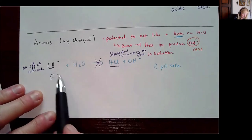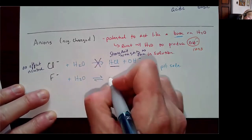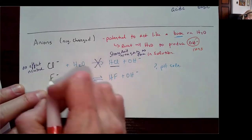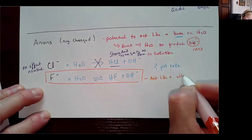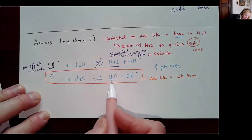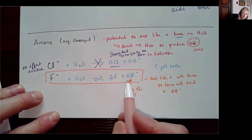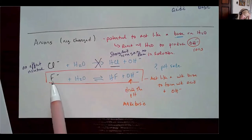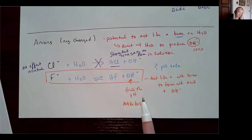Fluoride ion, however, is the anion of a weak acid, HF. In water it can form an equilibrium mixture with HF and OH⁻. Fluoride ion acts like a weak base — it accepts a proton from water, forming HF and hydroxide. This drives the pH upward, making the solution basic. So if you have an anion that is the conjugate base of a weak acid, it will always produce some hydroxide ion and raise the pH.